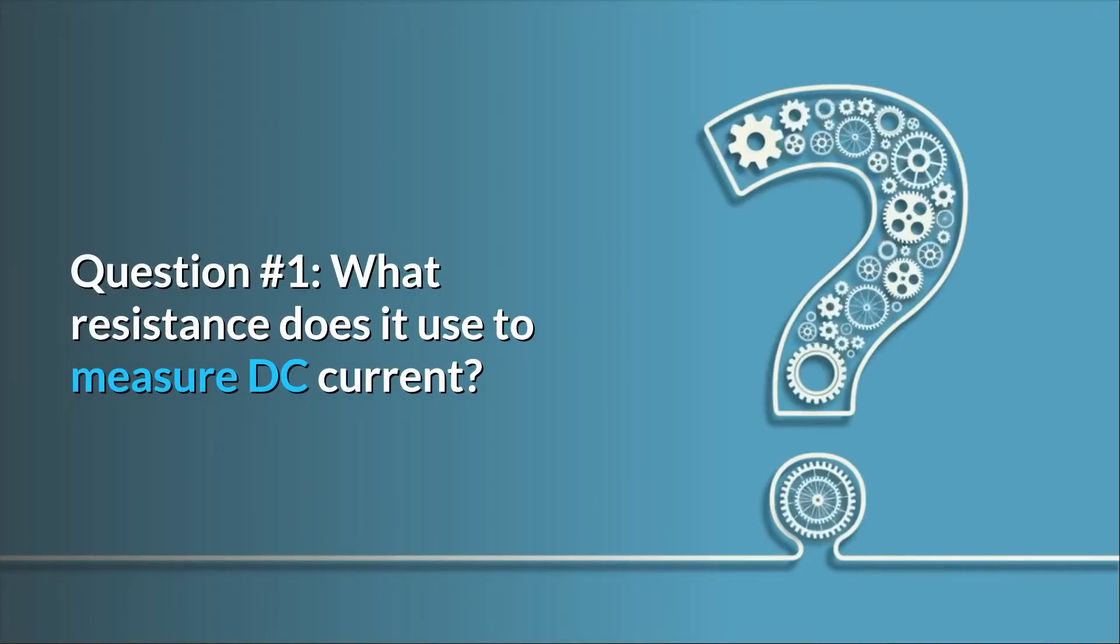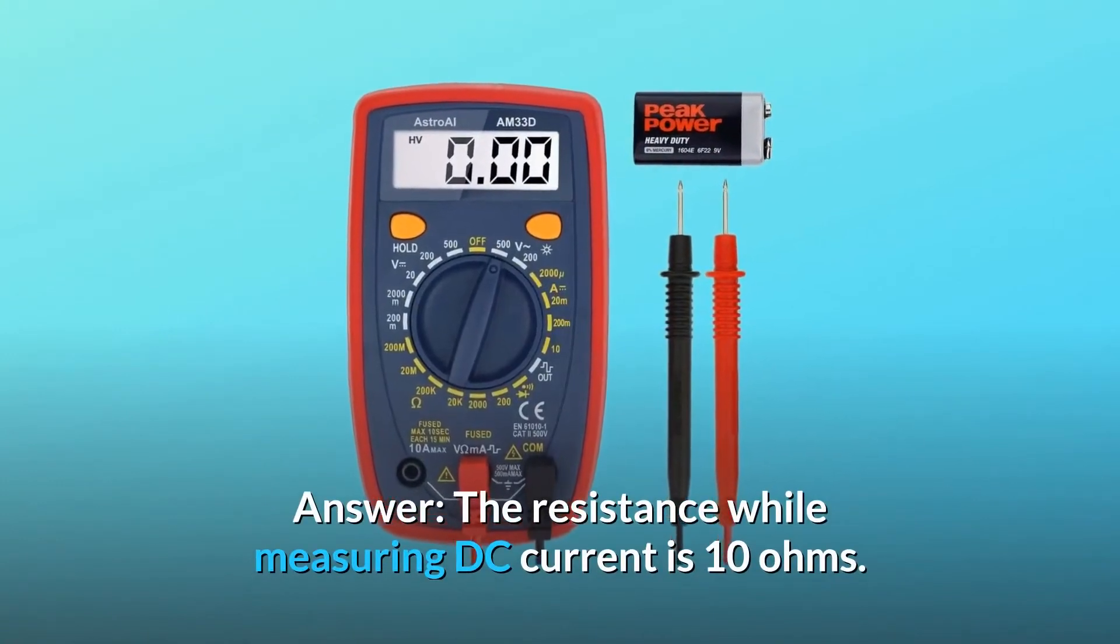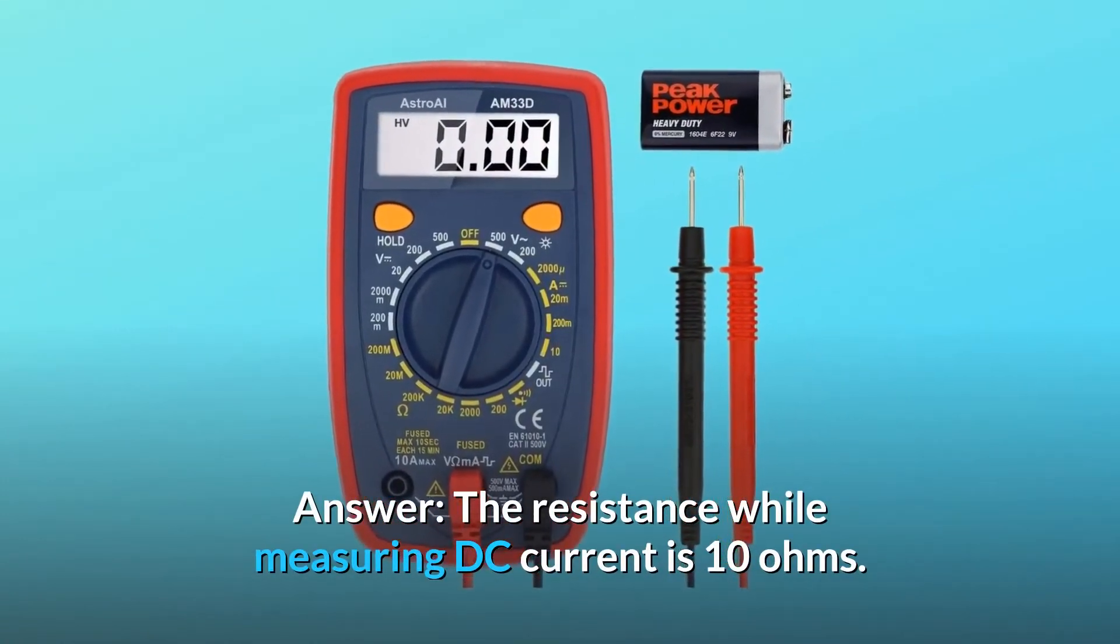Question number 1: What resistance does it use to measure DC current? Answer: The resistance while measuring DC current is 10 ohms.